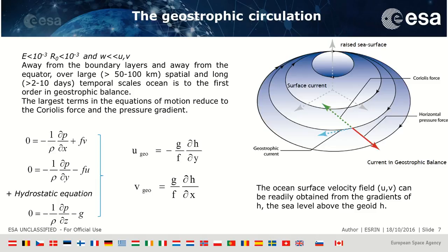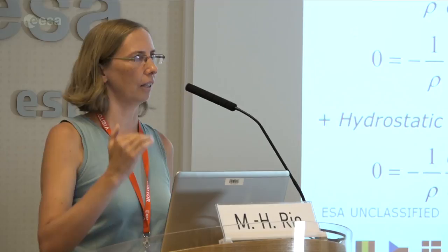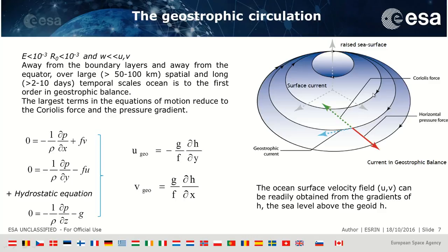In that case, the ocean is to first order in geostrophic balance, meaning the largest terms in the equation of motion reduce to the Coriolis force and the pressure gradient. Taking into account also the hydrostatic equation, we end up with a formulation showing that the ocean surface velocity is readily obtained from the gradients of sea level — this dynamic topography, which is the level above the geoid. The current is directed to the right of the pressure gradient in the northern hemisphere, and to the left in the southern hemisphere.